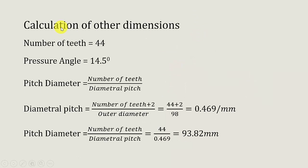Further I am going to calculate some additional dimensions. The number of teeth is measured as 44 and the pressure angle is 14.5 degrees. We have two possible pressure angles — 20 degrees and 14.5 degrees — and here I have considered 14.5 degrees.